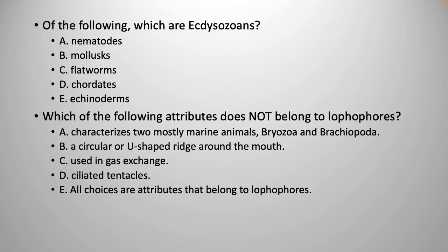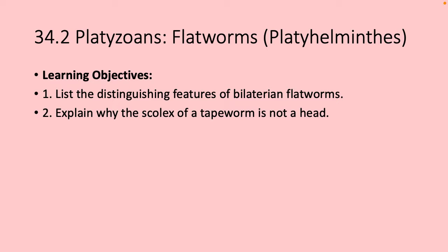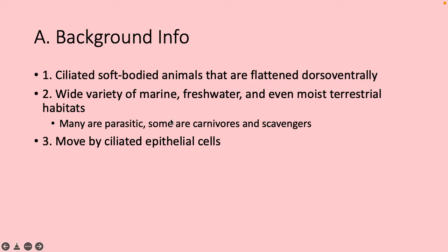Jumping into the Platozoans — flatworms, also known as Platyhelminthes. They are ciliated, soft-bodied, and flattened dorsoventrally — squished, hence the term flatworm. Wide variety of marine, freshwater, and even some moist terrestrial habitats. Many are parasitic. They are carnivores and scavengers. They move by ciliated epithelial cells — just kind of float and wiggle in their environments. It's mesmerizing to look at sometimes.